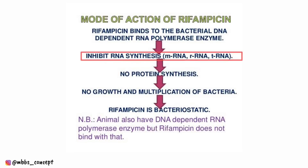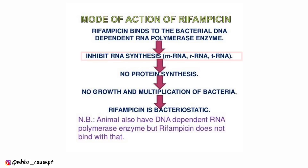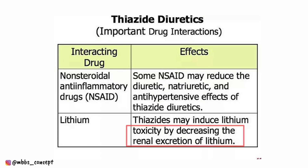The next question asked which drug stops transcription of DNA to RNA and therefore inhibits the synthesis of RNA — rifampicin was in the options and it was the correct answer. One question was asking about the interaction between thiazide and lithium: thiazide increases lithium toxicity by decreasing its excretion.